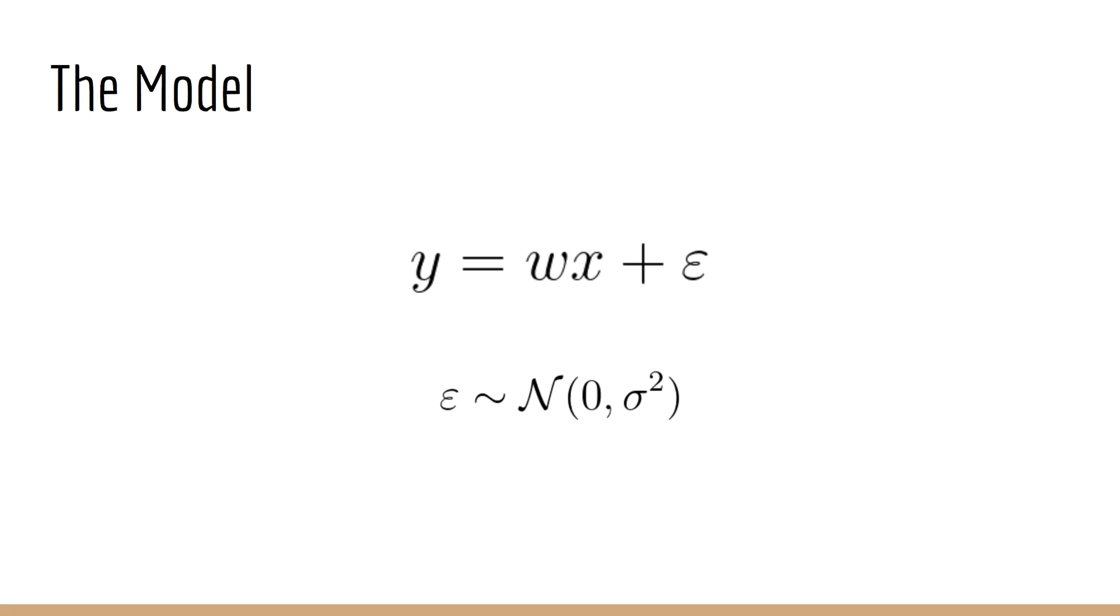Now, that being said, let's begin by looking at our model. Since this is just simple linear regression, we'll only have a single input variable, which we will call x. We'll have a slope which is called w, and a noise term which we call epsilon. The output will be called y. Our assumption, as per usual with linear regression, is that epsilon is drawn from a standard normal with mean zero and variance sigma squared.